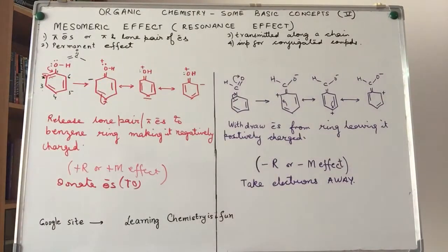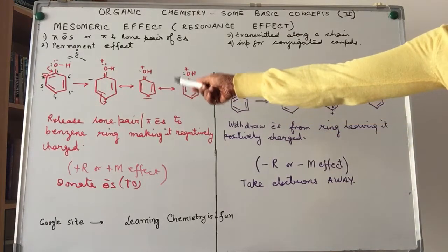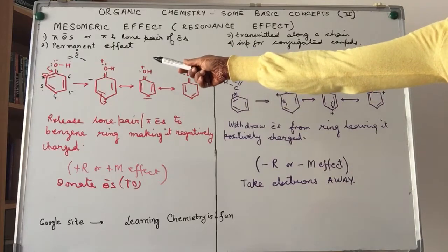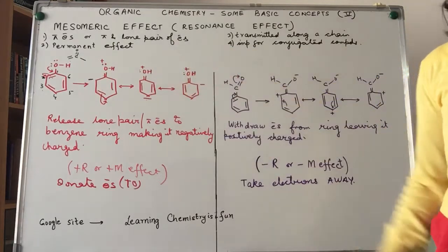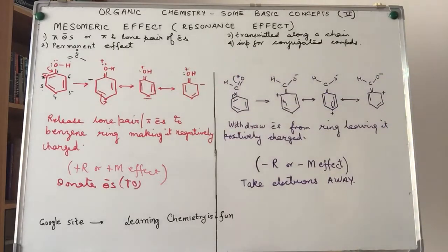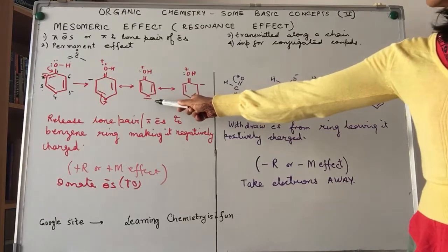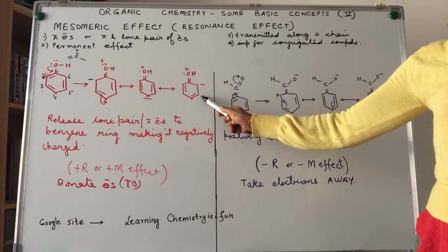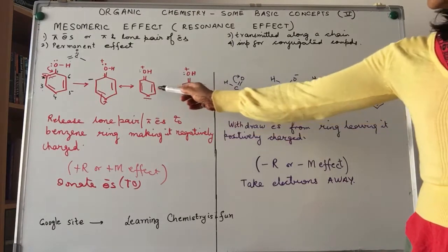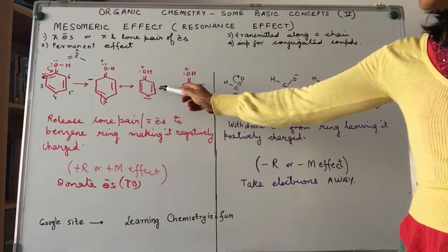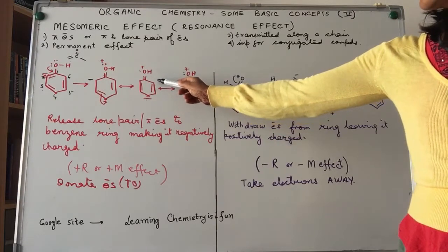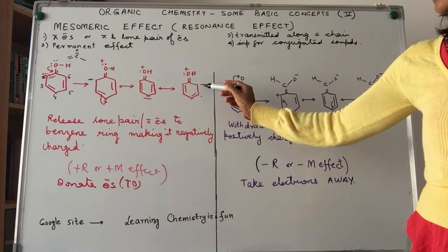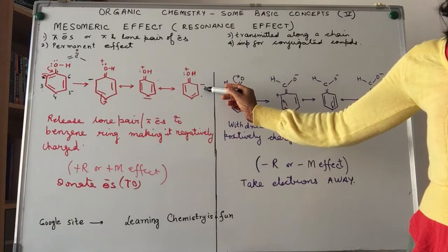Carbon number four, now carrying a negative charge, again has two possibilities: either it reverts to structure two, or it forms a double bond with carbon five, causing carbon six to acquire a negative charge.